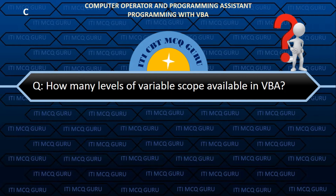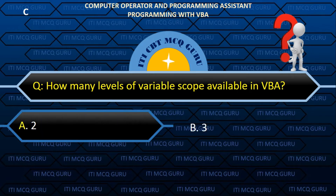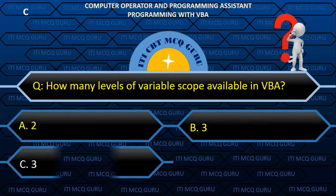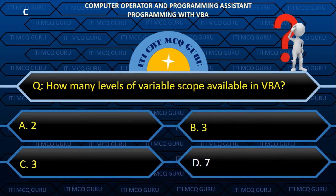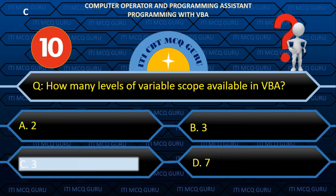How many levels of variable scope are available in VBA? Answer: C. 3.